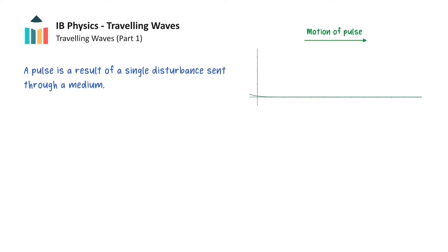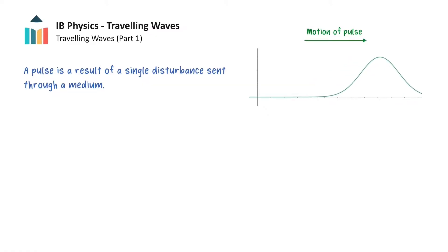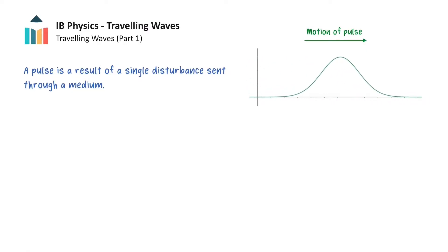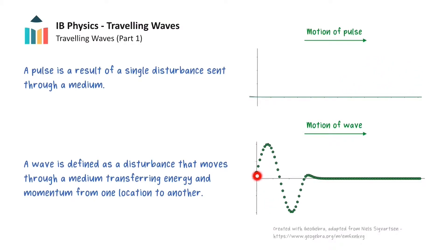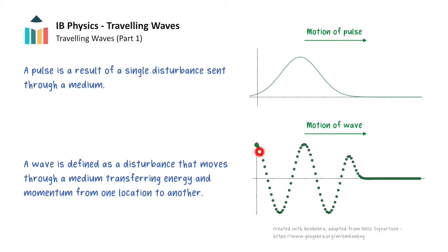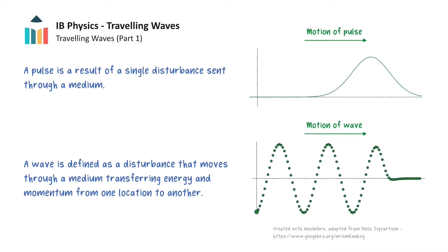If we give the rope a sudden up-and-down motion, a pulse will be produced that will look similar to this animation. The pulse will travel along the length of the rope, and the tension in the rope restores the straight-line shape of the rope once the pulse has passed. However, if the rope is given a continuous up-and-down motion, then a wave is produced along the rope, as shown by this animation here.